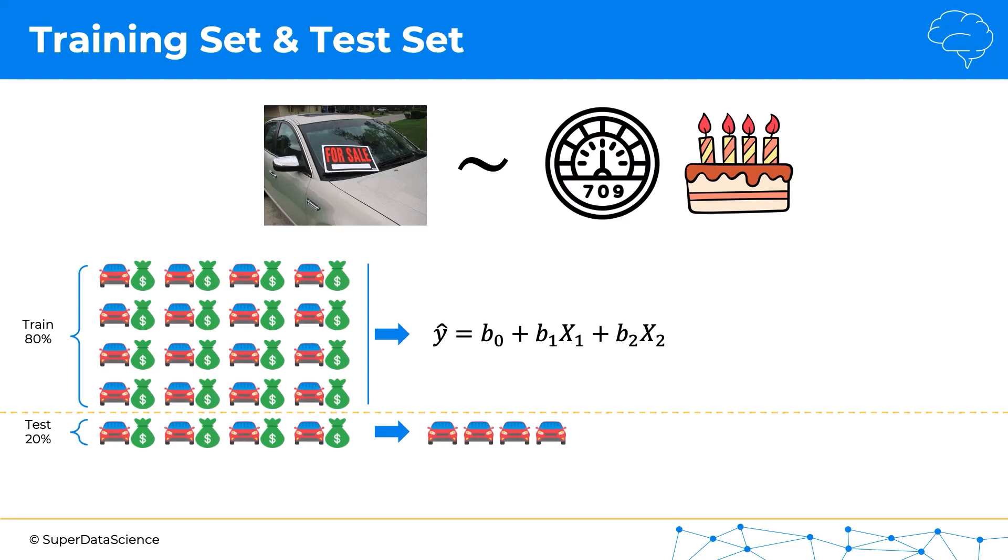And then we will take the cars from the test set, we will apply our model to them. So they haven't been part of the model creation process, the model has no information about these cars, and now we're applying this model to them and it's predicting certain values, certain prices.